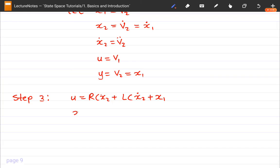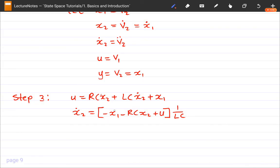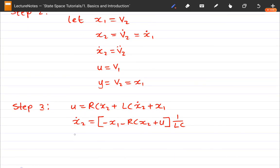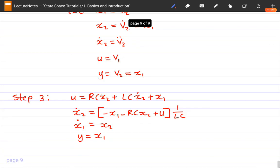We're going to get, let me put this in brackets, minus X1 minus RC X2, plus U, 1 over LC, and I hope you can see where that comes from. And that's for the derivative of X2, and then for the first derivative of X1, this is just going to be X2, and Y, again, is just X1. I think that should be it.